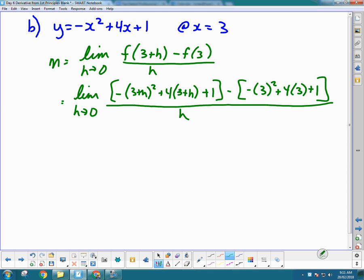So I'm going to have to square 3 plus h, so I'm going to do that again off to the side. 3 plus h times 3 plus h, rainbow, rainbow, is 9 plus 3h plus 3h plus h squared, so 9 plus 6h plus h squared.